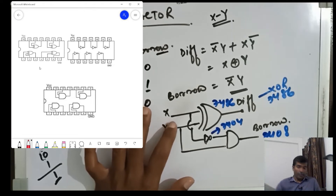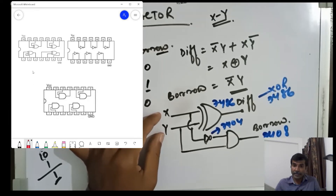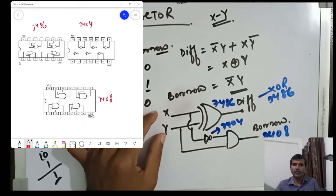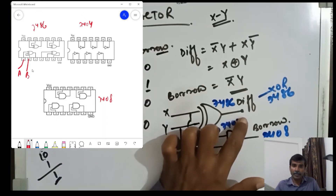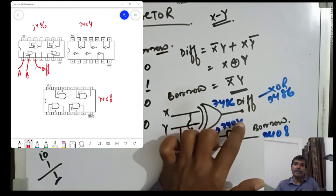First, we have X and Y connected to the XOR gate. We are taking the first XOR gate — this is IC 7486. This one is IC 7404 for the NOT gate, and this one is IC 7408 for the AND gate. Here we have taken A and B as inputs, and at the output we get the difference DIFF.